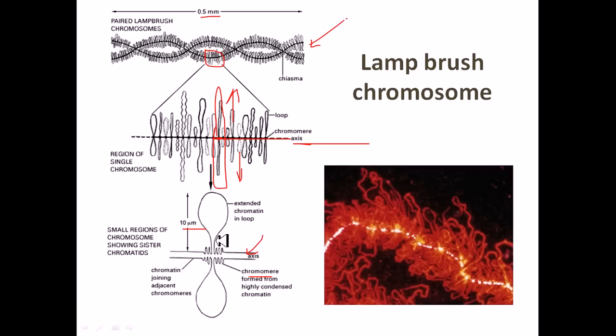These loops are also made of DNA strands. The DNA makes these loops, and loops are joined together with the axis via chromomere formation. Finally, this whole axis coils with each other to make a really complex and compact structure.